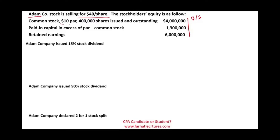Common stock has a $10 par value. Adam has 400,000 shares issued and outstanding, which is $10 times 400,000 shares, giving us $4 million. Paid-in capital in excess of par on common stock is $1.3 million, and retained earnings is $600,000.